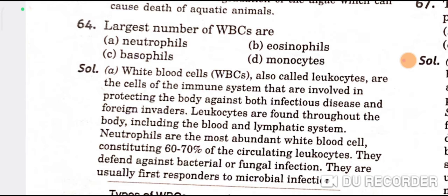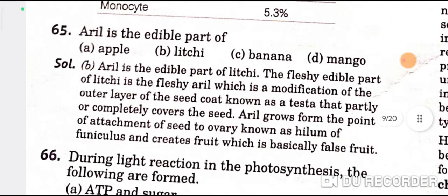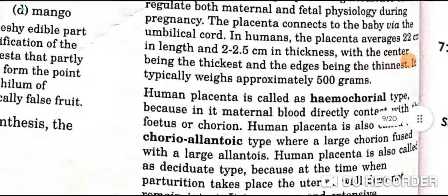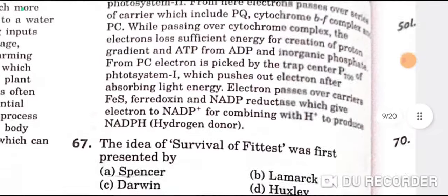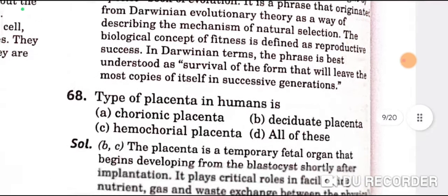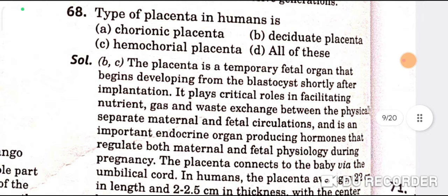Aril is the edible part of lychee — B is the correct option. During the light reaction in photosynthesis, the following are formed: ATP, hydrogen donor, and O2 — C is the correct option. The idea of survival of the fittest was presented by Spencer — A is the correct option. The type of placenta in humans is deciduate placenta and hemochorial placenta — B and C are the correct options.